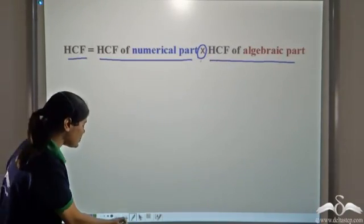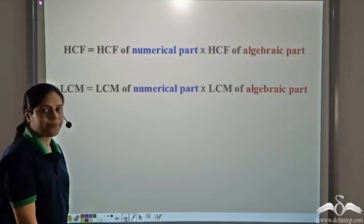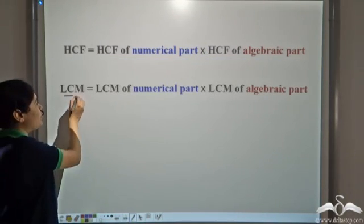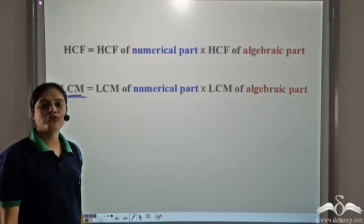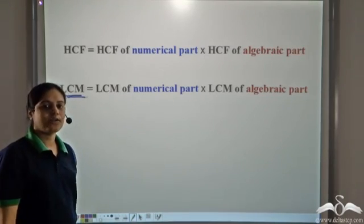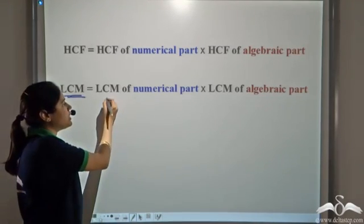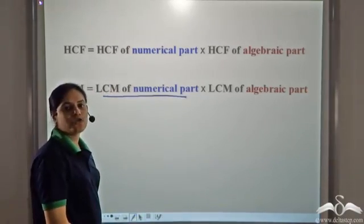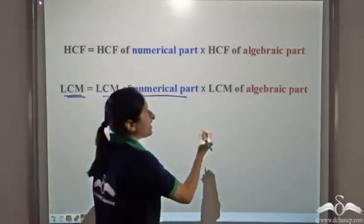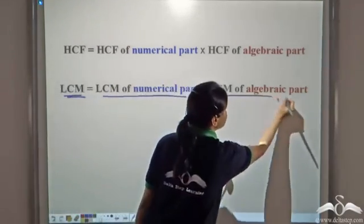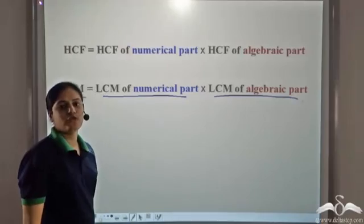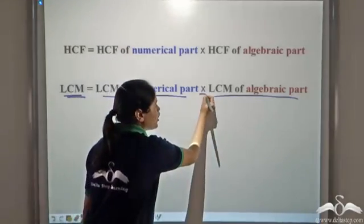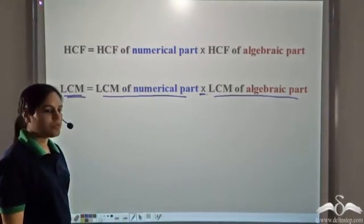Similar is the case with LCM. In order to calculate the LCM of two or more terms, you need to find the LCM of the numerical part of those terms and the LCM of the algebraic part of those terms, and then multiply those.